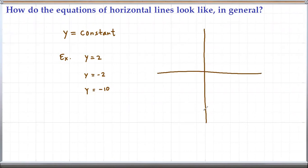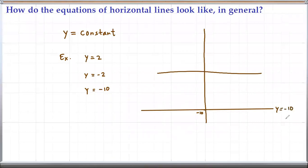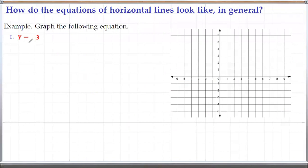So y equals negative 10 would have a graph like this — a horizontal line going through y equals negative 10. Similarly, y equals negative 2 would be something like this, a horizontal line through that point. And y equals negative 3 is simply a horizontal line going through y equals negative 3.